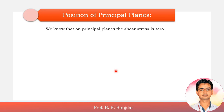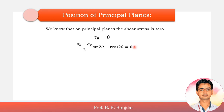We know the definition: what is the principal plane? It is a plane on which the shear stress is zero. We have to find out the plane on which the shear stress is zero, meaning tau theta should be equal to zero. And if we equate it to zero, then we will get the principal plane.